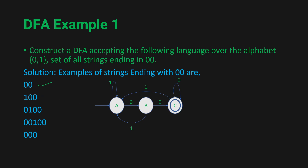For the string '0100': in state A we get 0 and go to state B. Then we get 1 and come back to state A. Then we get 0 and go to state B. Then we get another 0 and go to state C. Is state C a final state? Yes — so '0100' is also accepted.